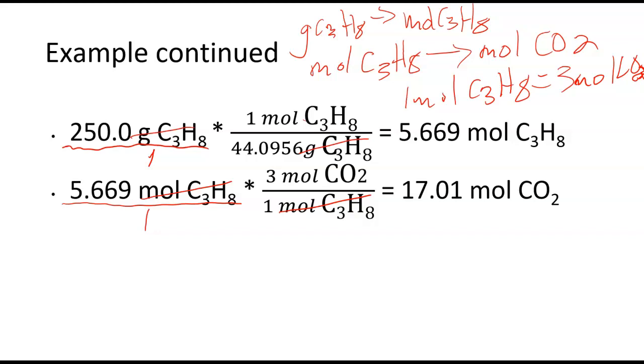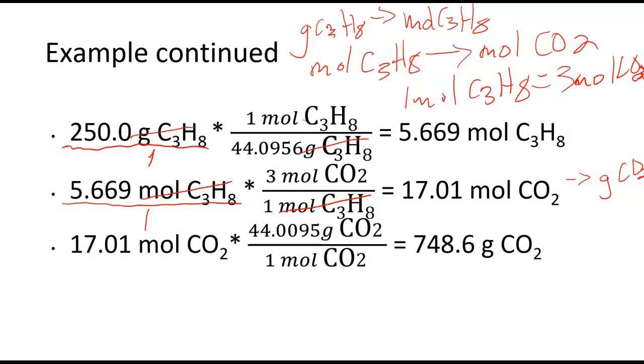My last step, I'm going to convert moles of CO2 to grams of CO2 using that molar mass we already calculated. 17.01 moles of CO2, I put that over one, times 44.0095 grams CO2 for every one mole, gives us 748.6 grams of CO2. Notice that I want to make sure and round to the proper significant figures at each step.